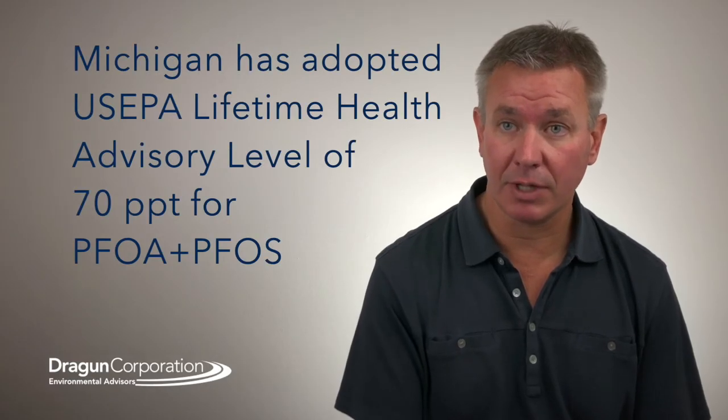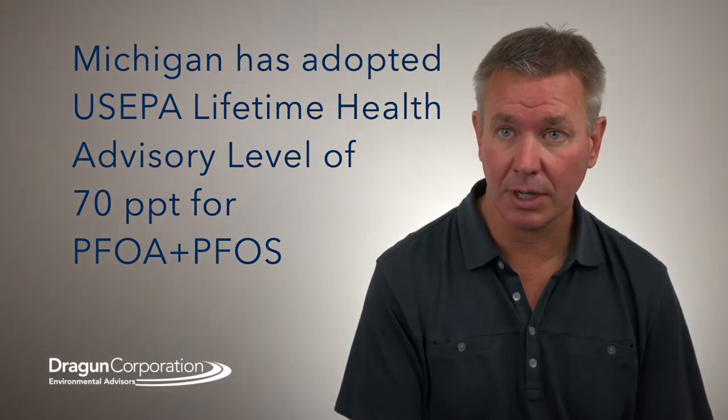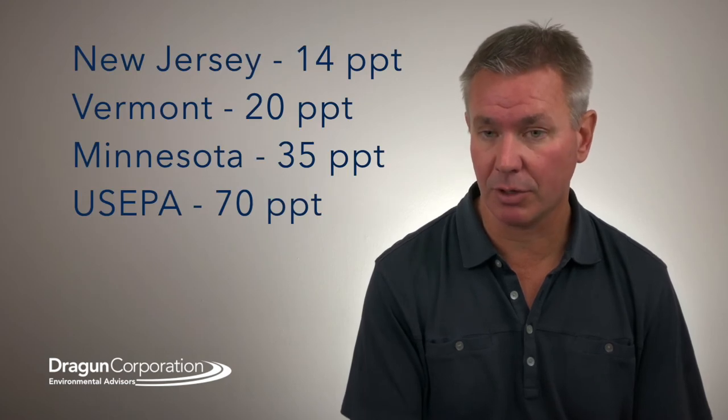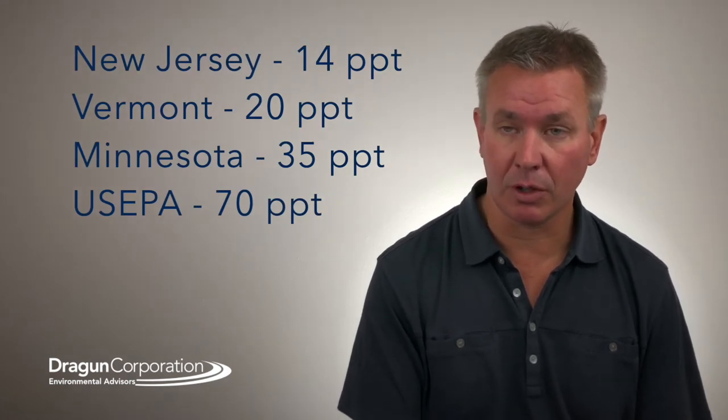Many states, particularly those that have known problems, are establishing their own criteria independent of any federal action. So some of the states like Michigan have adopted the EPA health advisory level as their groundwater cleanup criteria. Some other states are higher and there's some other states that are going lower such as New Jersey and Vermont and Minnesota have criteria that are quite a bit lower than the US EPA health advisory.